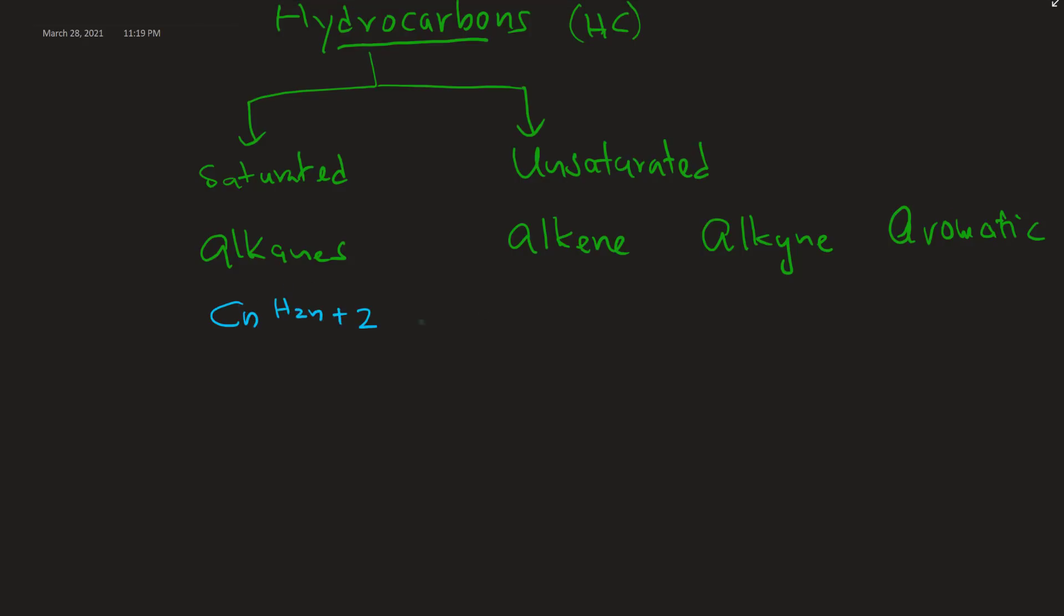Alkanes are CnH2n plus 2, alkenes are CnH2n and alkynes are CnH2n minus 2. Aromatics don't bother about giving a generic formula. So this generic formula applies to alkanes, alkenes and alkynes.